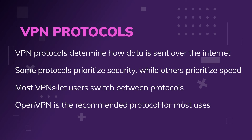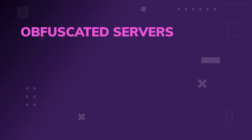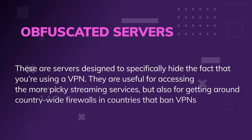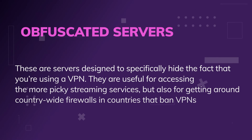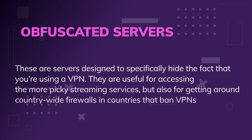Circling back to protocols that are better for streaming, keep an eye on ones like WireGuard and Lightway. And let's talk about obfuscated servers — these are literally designed to just hide the fact that you're using a VPN. They can be useful for really strict streaming services like Netflix that don't want you using a VPN, but they're also good for countries where VPNs are banned, and for getting around firewalls and VPN detection technology.